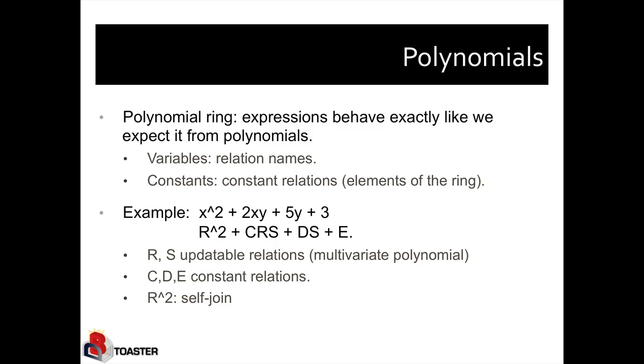We can talk of polynomial rings. We can create expressions over our ring using a language of plus, multiplication, constants, which are just constant relations, elements of the ring, and variables, which are relation names. So for example, if you think of classical polynomials, x squared plus 2xy plus 5y plus 3, a bivariate polynomial, we can correspondingly have something like R squared plus CRS plus DS plus E, where R and S are relational variables, updatable relations, and C, D, E are constant relations. And of course, R squared is a self-join.